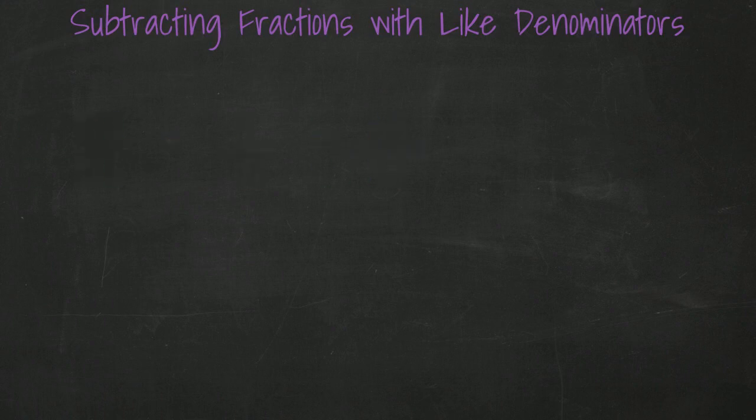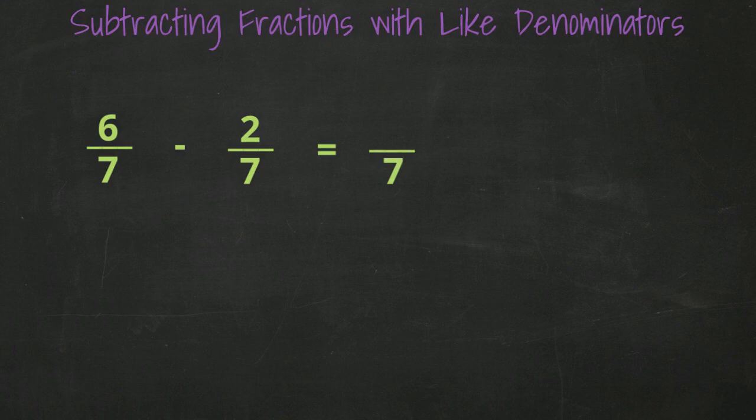Next example, 6 over 7 minus 2 over 7. We keep the denominator of 7, and we subtract 2 from 6, and we get 4. 4 over 7 is in its simplest form.